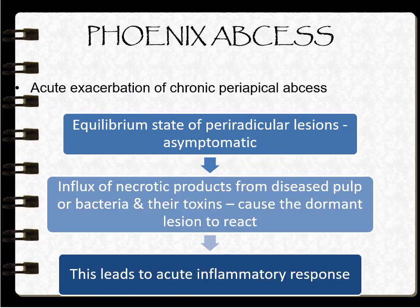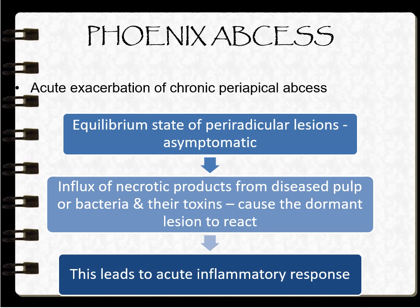Next is the phoenix abscess. It is also called acute exacerbation of chronic periapical abscess. In this condition, the patient has an asymptomatic state at the periradicular area — an equilibrium state. But an influx of necrotic products from the diseased pulp, or bacteria and their toxins, causes the dormant lesion to react, activating the previously asymptomatic situation and leading to an acute inflammatory response.